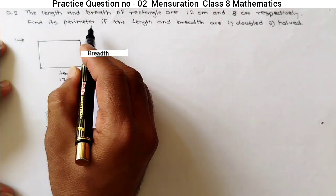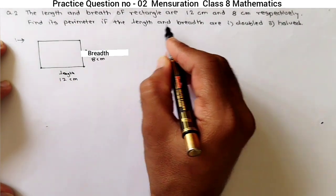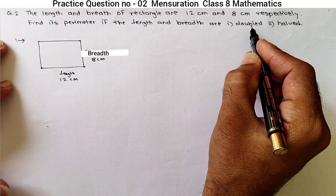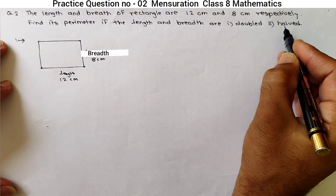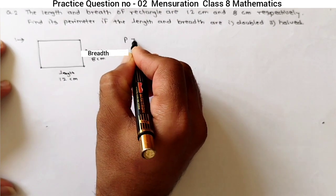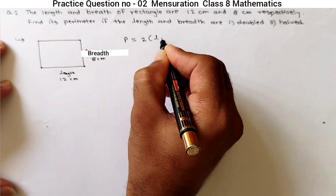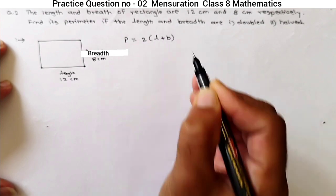Now, what is asked? Find the perimeter when the length and breadth are in first condition double and second condition half. Formula for perimeter of any rectangle is 2 into bracket L plus B. This is a simple formula.